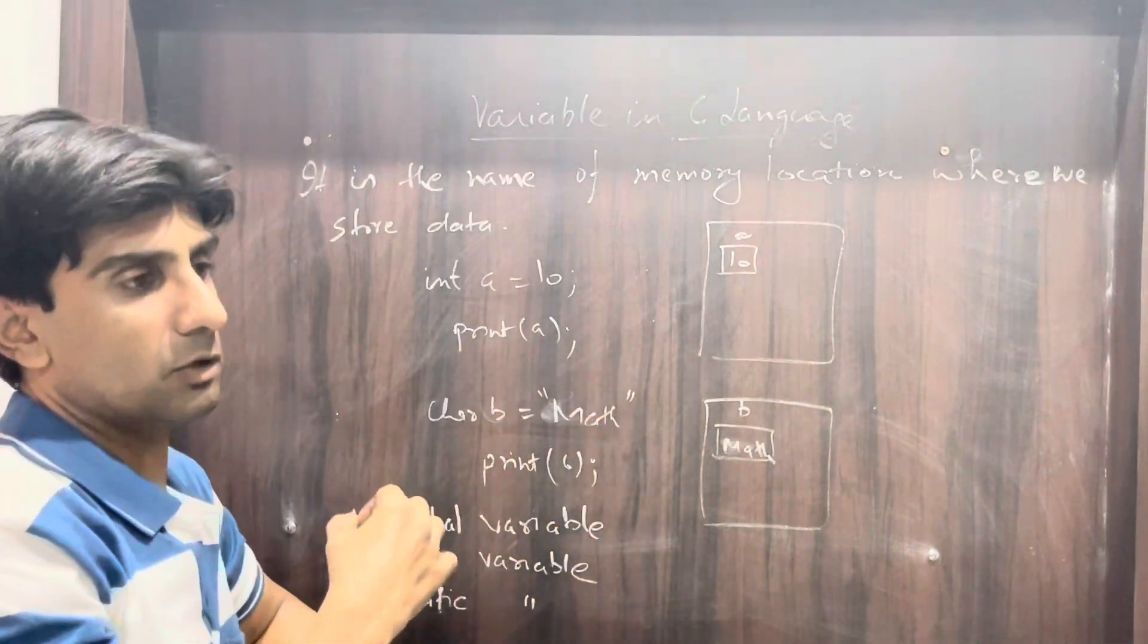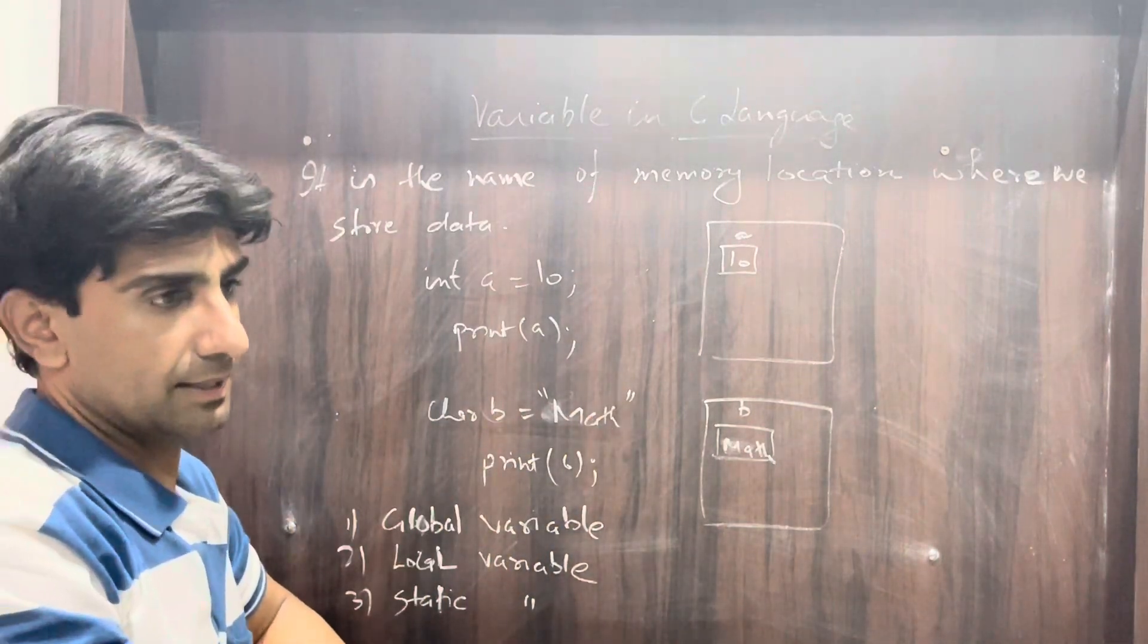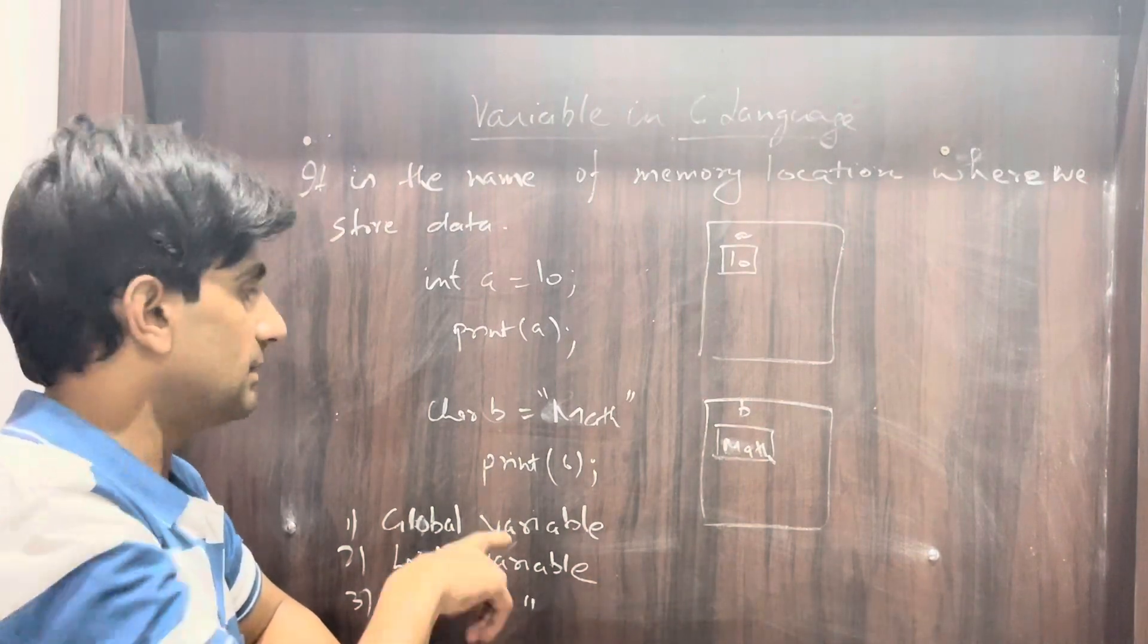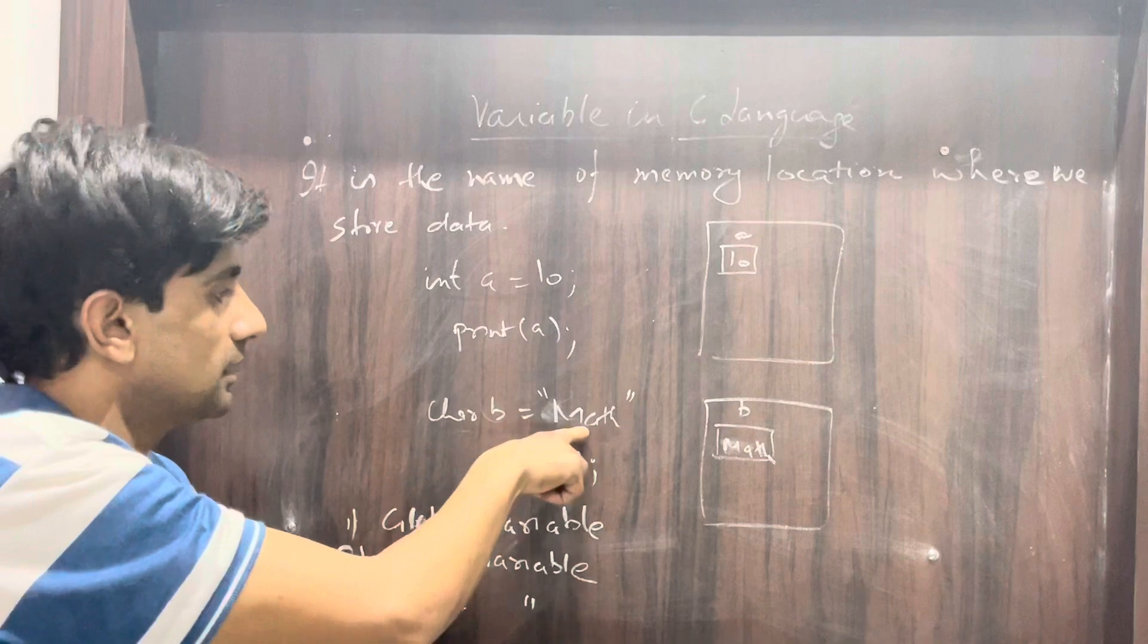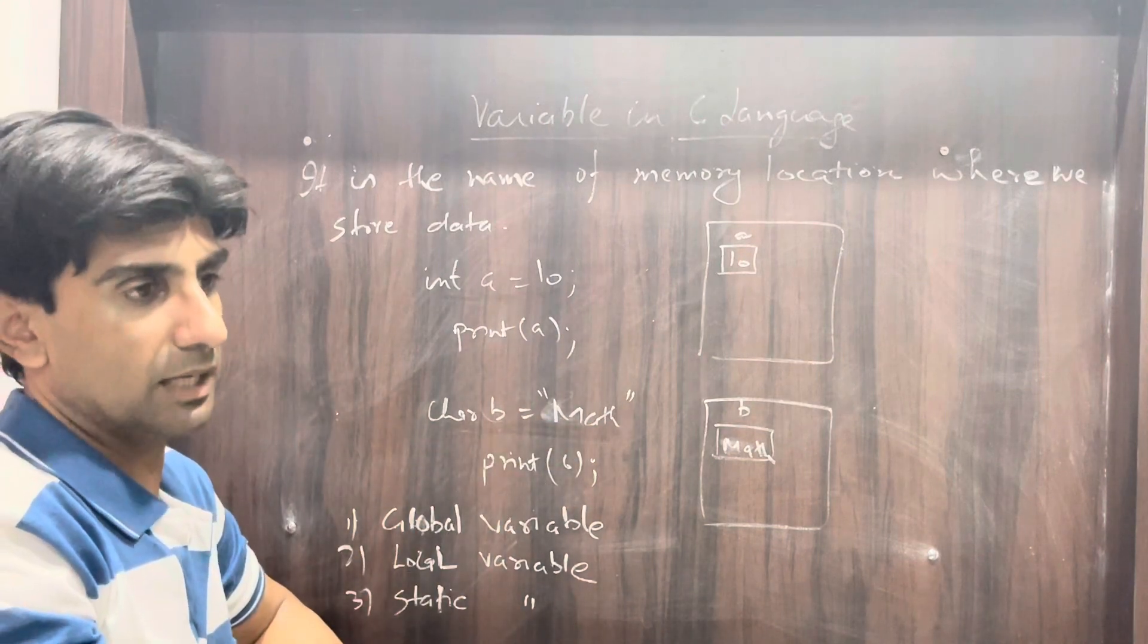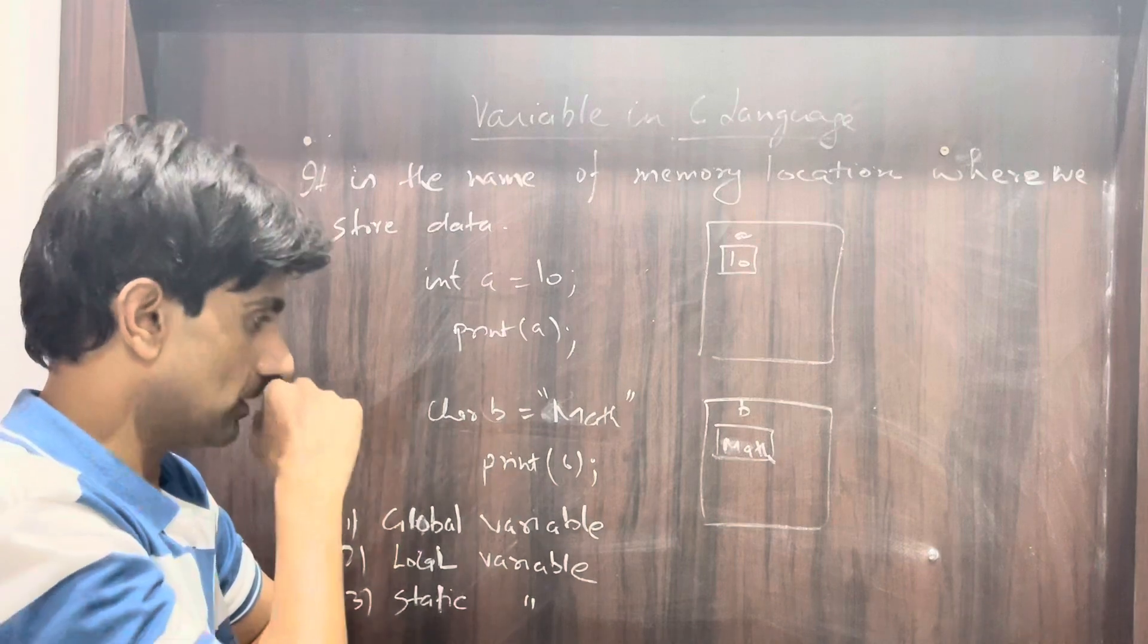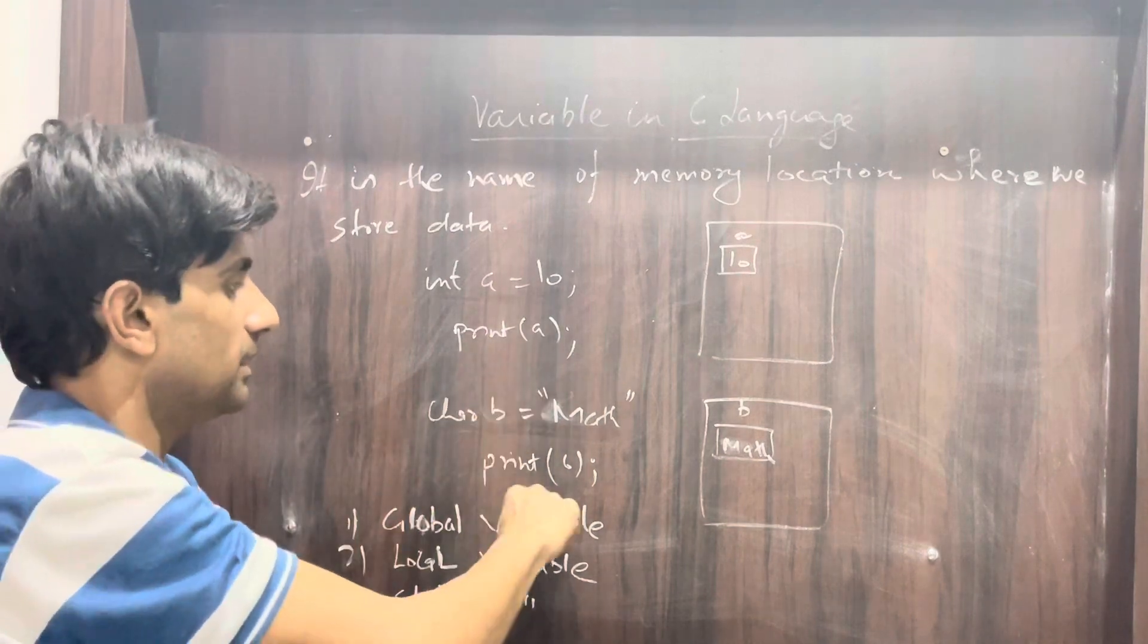When we write like this, our program automatically creates memory of the data type that is involved to store that particular value which is in front of that data type.